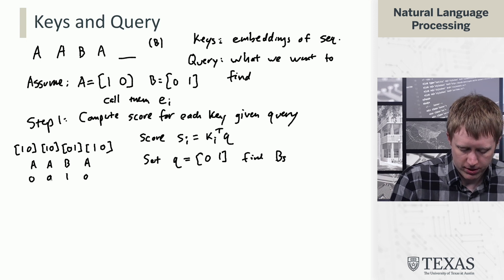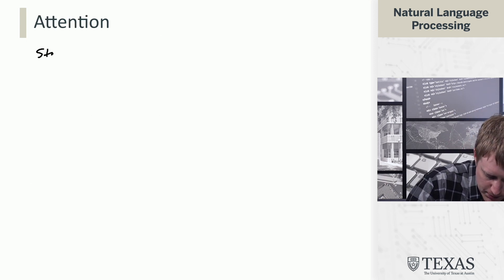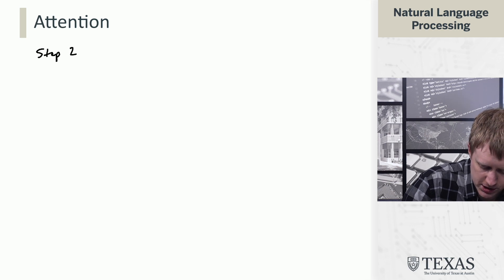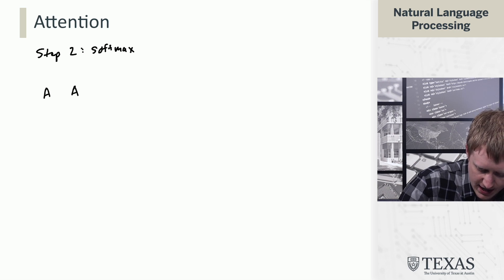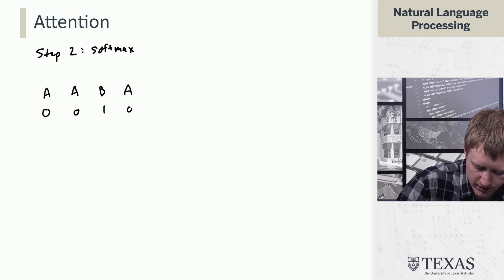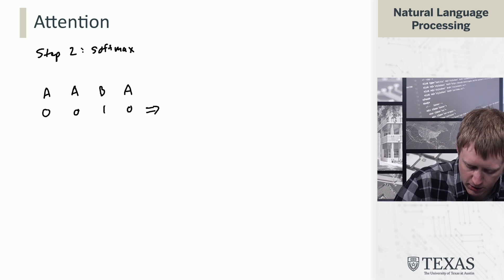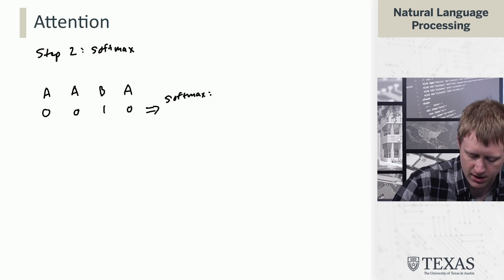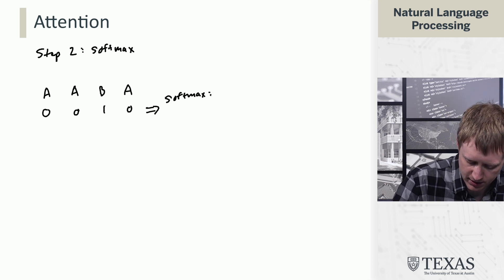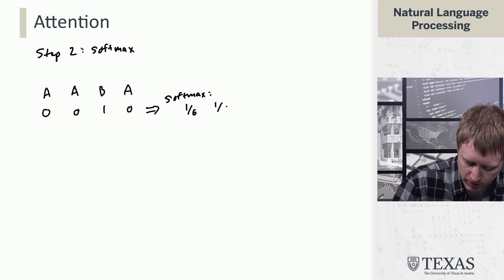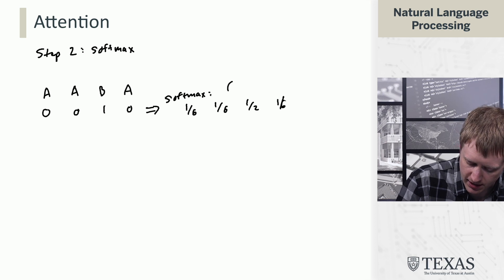Alright, so then let me rewrite this over here for step 2, which is going to be to softmax. So, we had our sequence AABA with scores 0, 0, 1, 0. And when we softmax, that gives us the following vector of probabilities if we assume e equals 3.